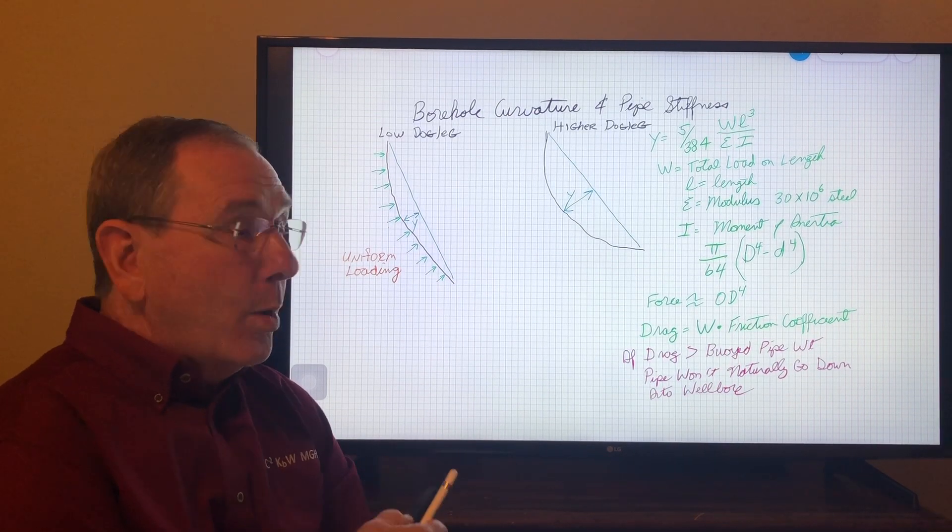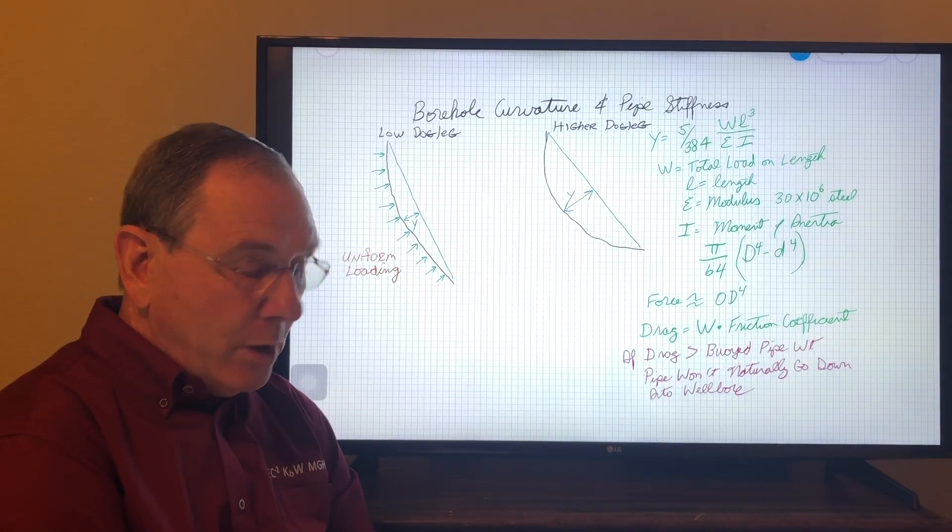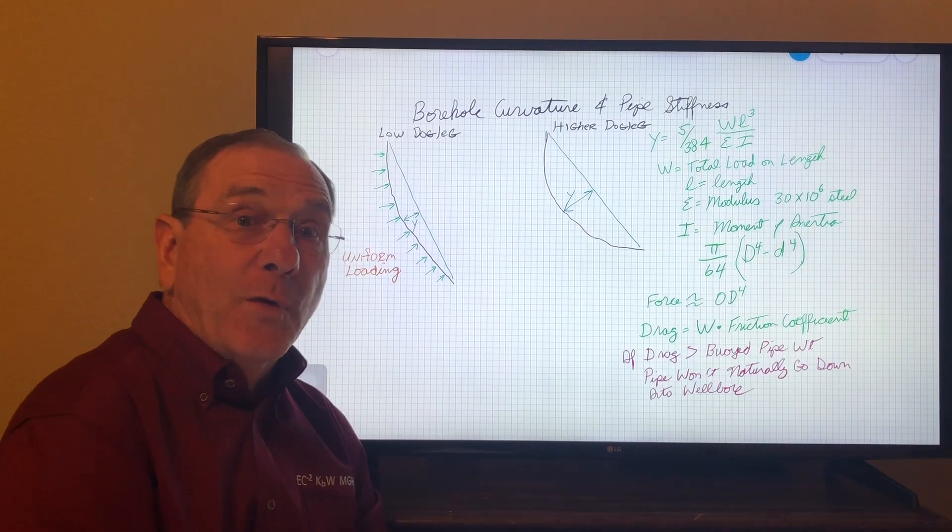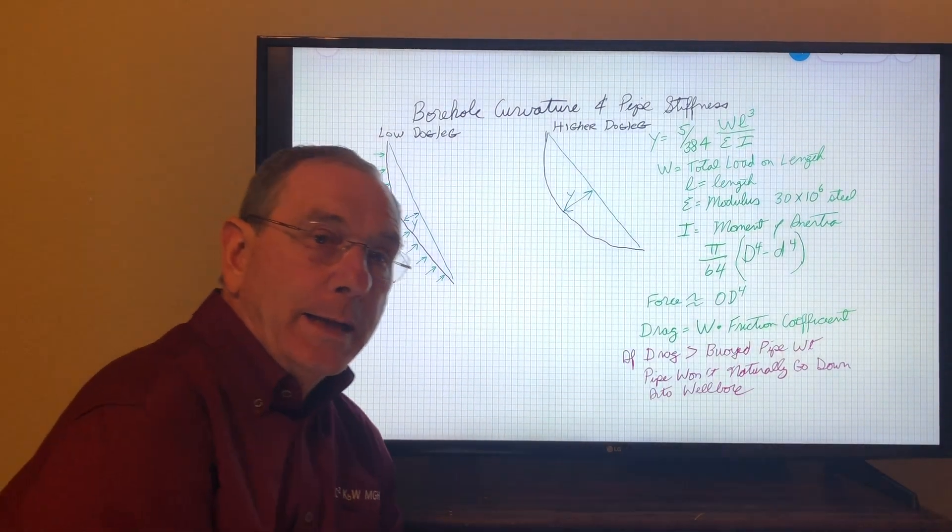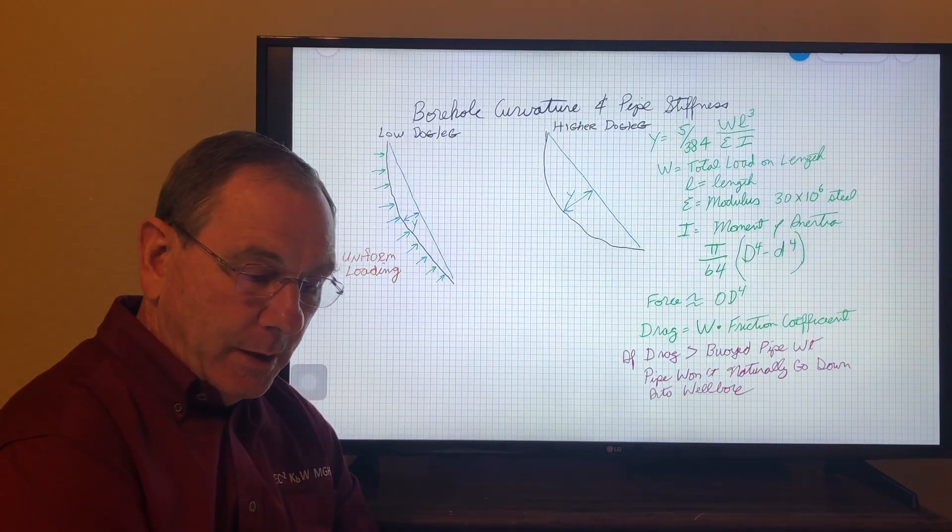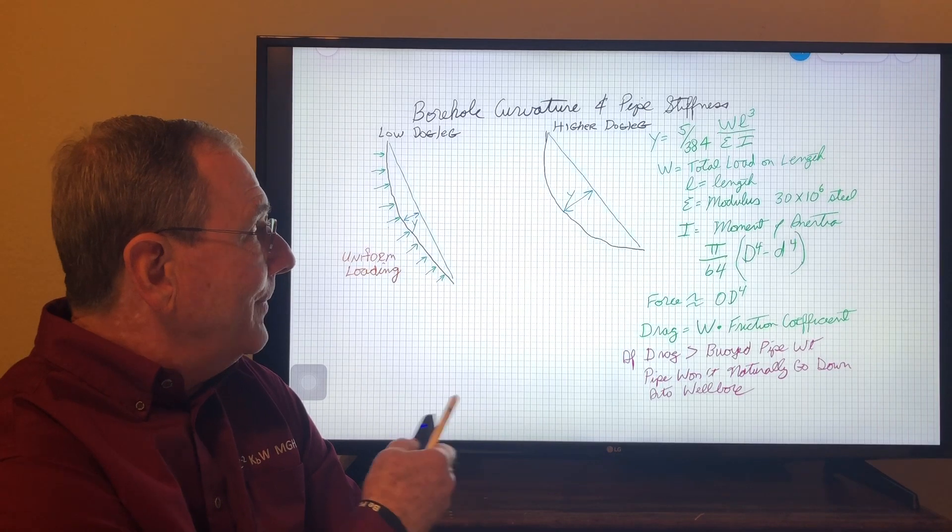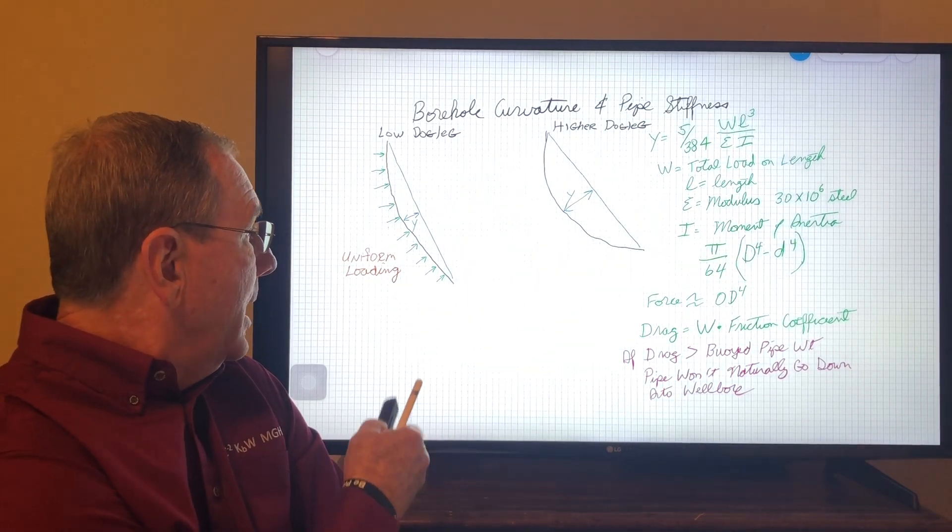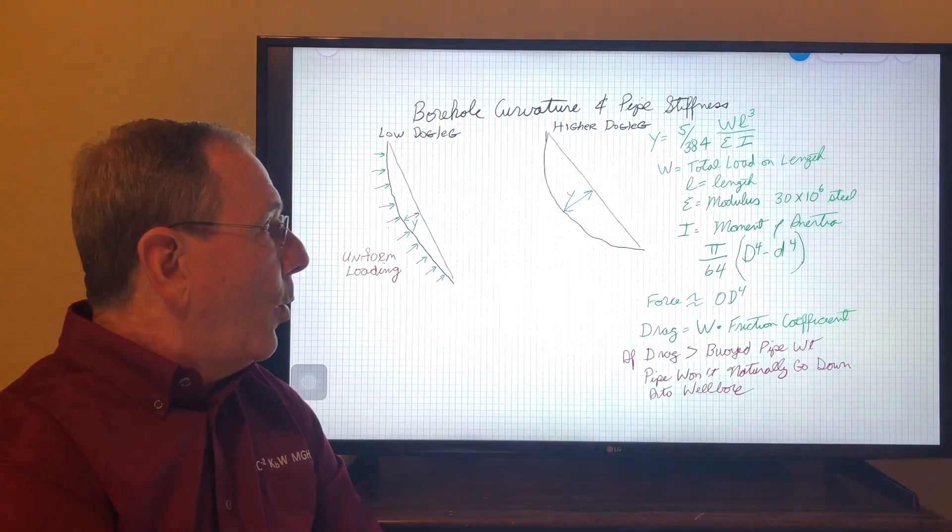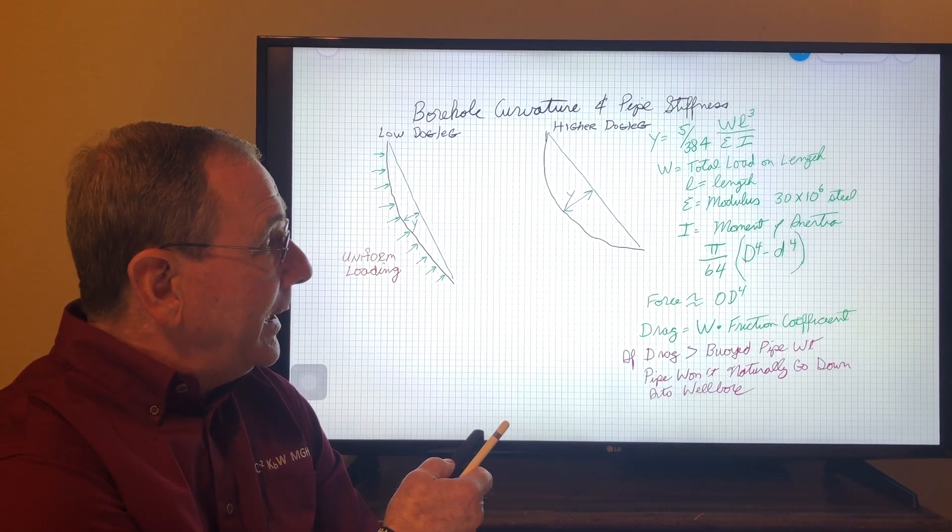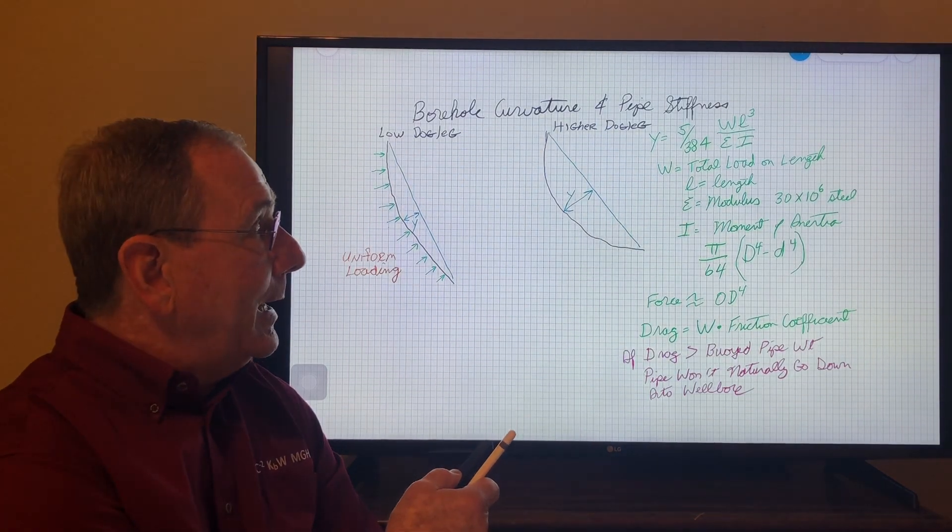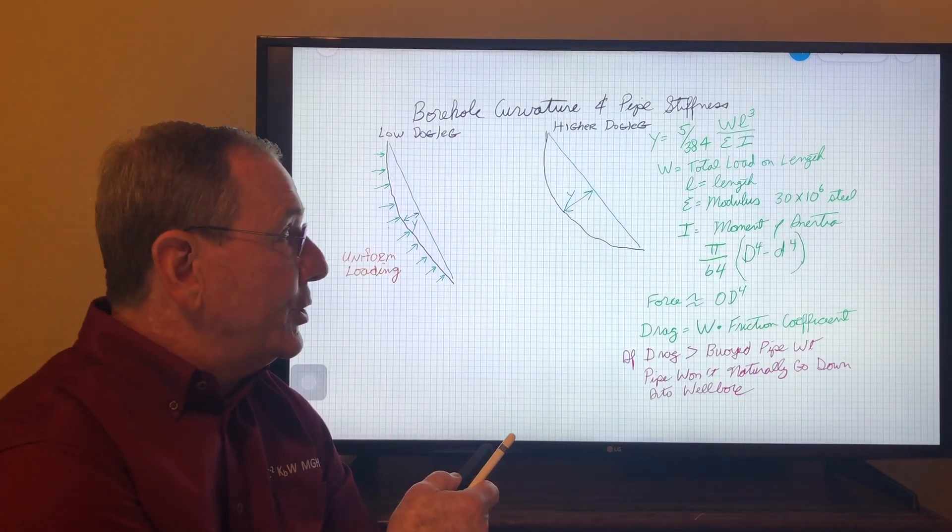Using the properties of a circle, we can calculate the displacement y in both cases, say over the length of a 45-foot joint of casing required to bend that pipe through that curvature. We can go back to our mechanics of materials that we took in college and derive the equation for this displacement y. If you have a uniform load like I've drawn on the left here with equal force along that pipe wall, the displacement is 5 over 384 times the total load times the length cubed divided by the modulus of elasticity and the moment of inertia.